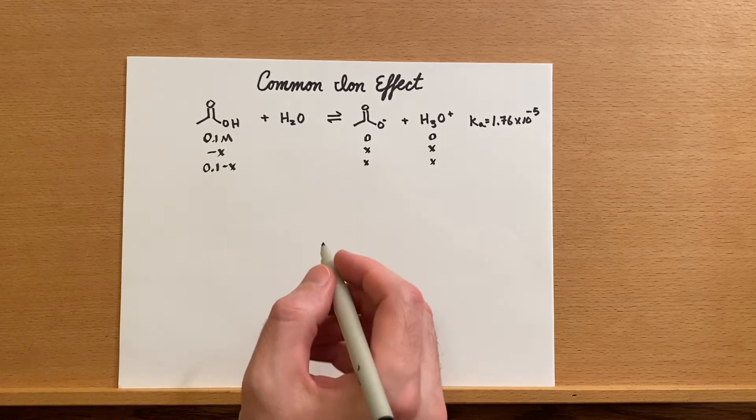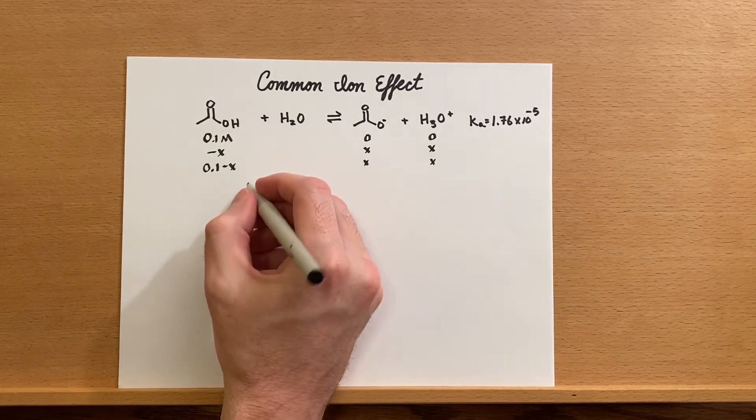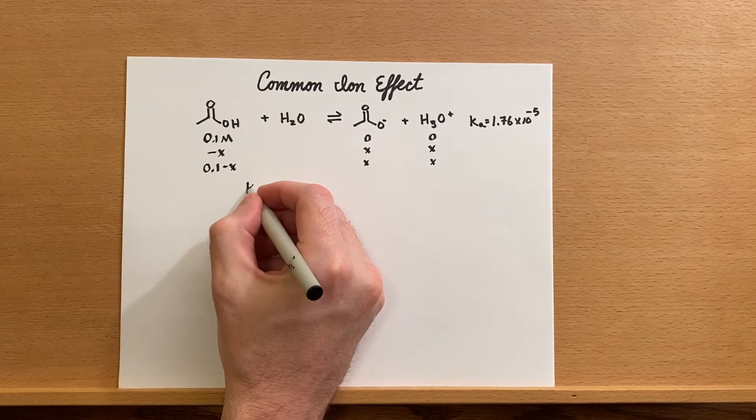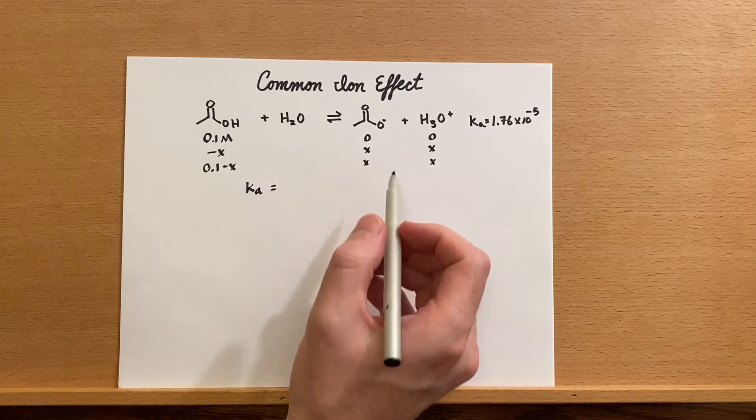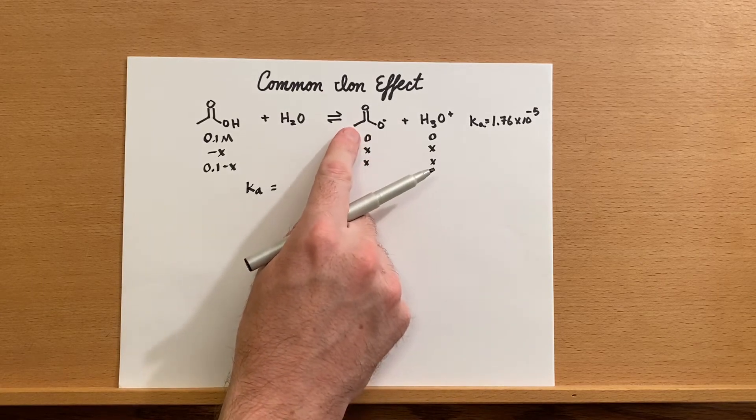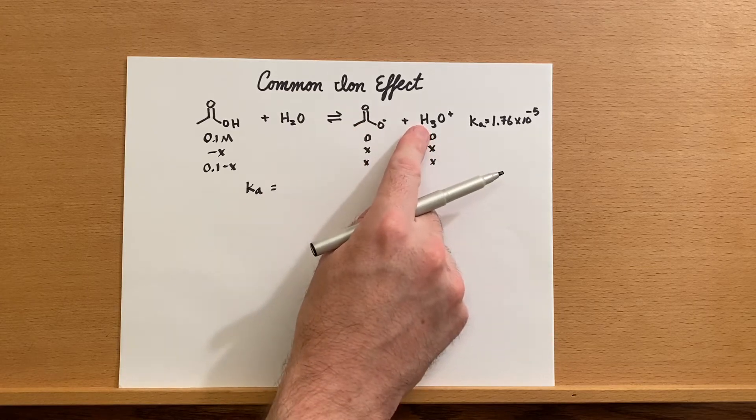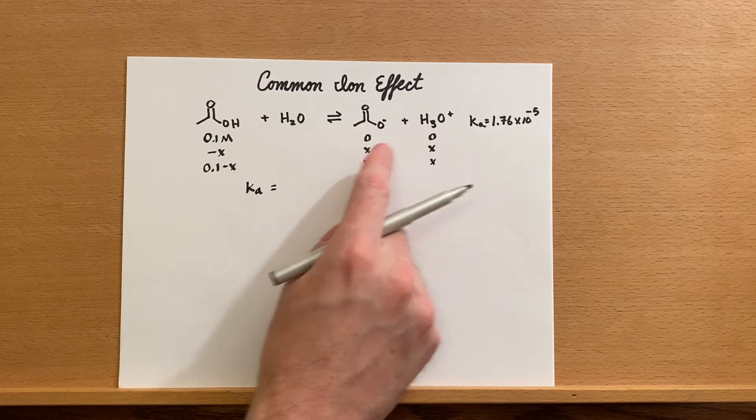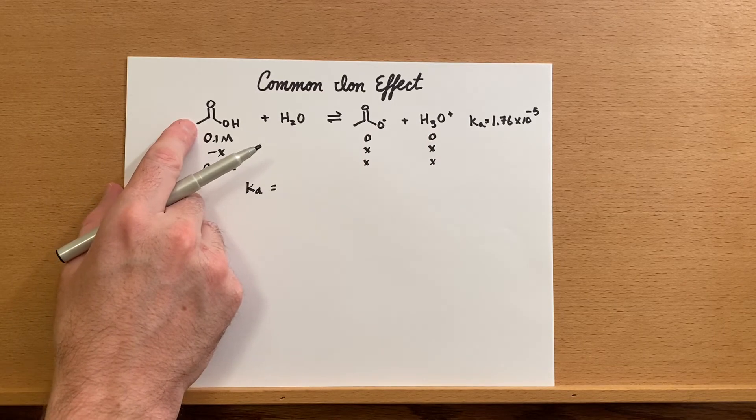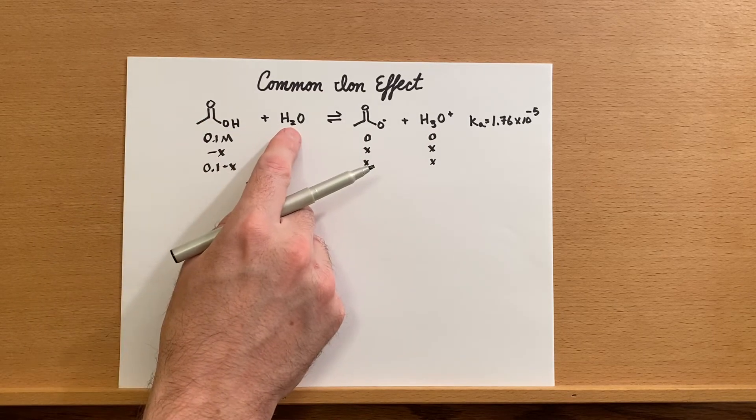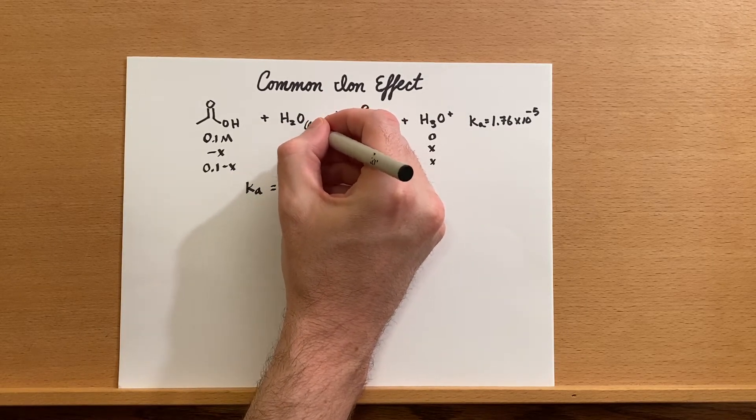Here's the Ka value: 1.76×10^-5. Our Ka expression is concentration of the acetate ion times concentration of the hydronium ion divided by the acetic acid concentration. We leave off water because that's the solvent, and in that case this is a liquid so that doesn't go in.